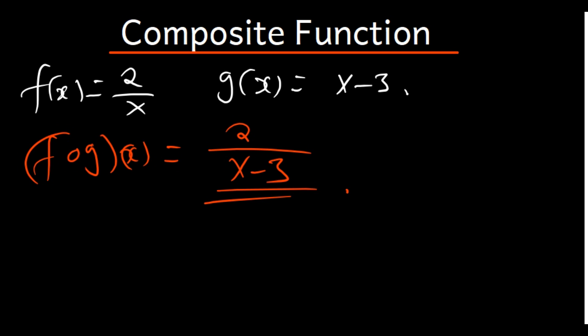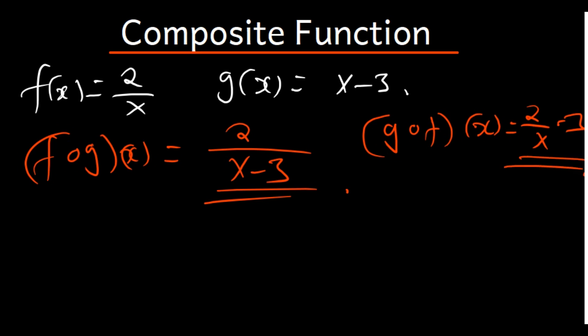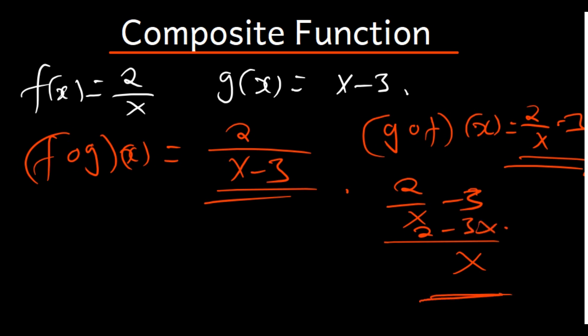What if they ask us to find g of f of x? That is going to be the opposite. In the function g, where there is x, we put f, which is 2/x. So it's going to be 2/x minus 3. If you want, you can simplify this further as (2 - 3x)/x. Both forms are equivalent.